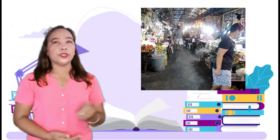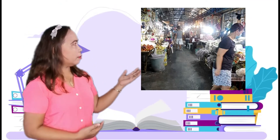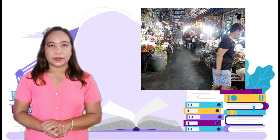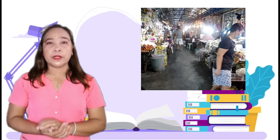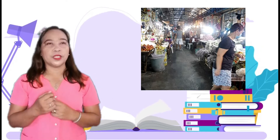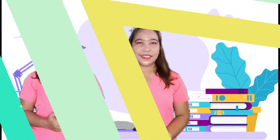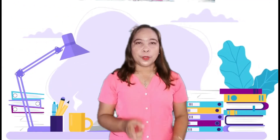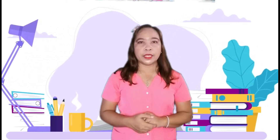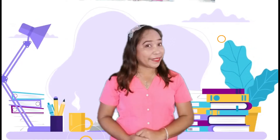Now, I want you to look at the picture of a market. Say something about it. Have you experienced going to the market? Today, we will identify and use adverbs of place in sentences. Before we start our lesson, I want you to be ready with your paper and your ballpen. Shall we start?